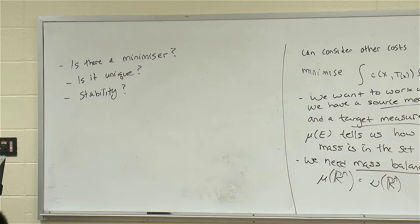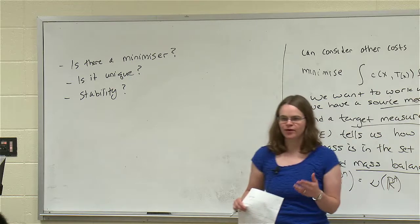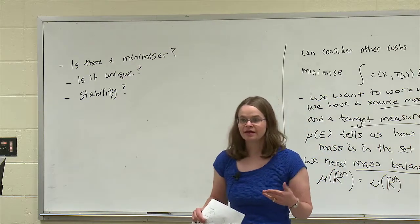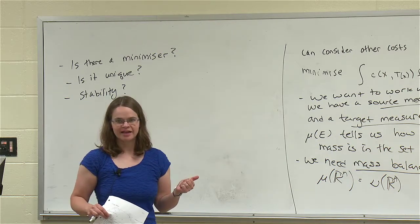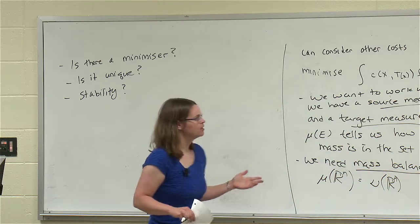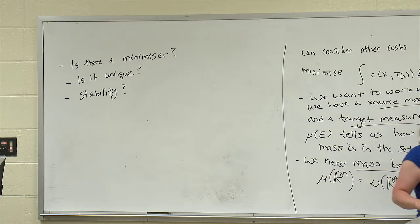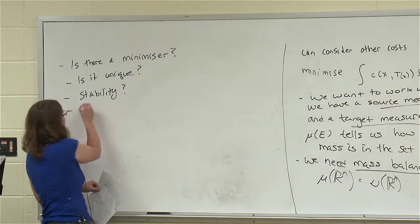What's the space we're minimizing over? We're minimizing over mappings that satisfy the push-forward constraint. And is the feasible set non-empty — is there actually any mapping that accomplishes the desired rearrangement? Forget trying to minimize; can we even find any mapping that rearranges the source into the target? Is it feasible?